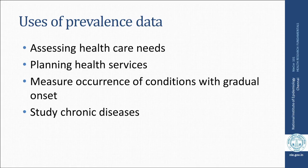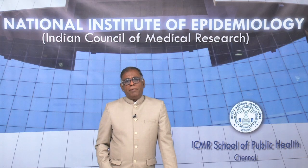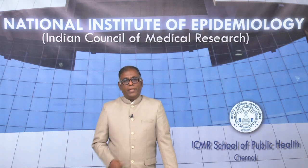Prevalence data is used to assess health care needs and is very useful in planning health services, because it measures the burden of disease. It measures the occurrence of conditions with gradual onset and is very useful in the study of chronic diseases. Another important measure in epidemiology is incidence.